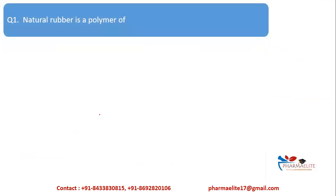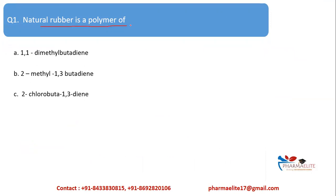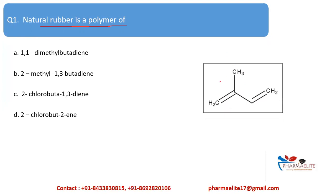Question 1: Natural rubber is a polymer of — (a) 1,1-dimethyl butadiene, (b) 2-methyl-1,3-butadiene, (c) 2-chlorobutadiene, (d) 2-chlorobut-2-ene. Since natural rubber has a methyl substituent at the second position of the butadiene backbone, the correct answer is (b) 2-methyl-1,3-butadiene. The chloro substituent is for neoprene.